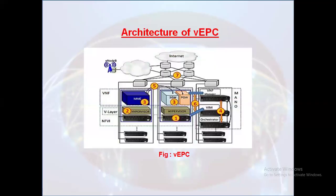Next we'll move on to the architecture of VEPC. This Virtualized Evolved Packet Core architecture mainly comprises of Virtualized Network Function, VNF, and Management and Orchestration, that we are calling it as MANO, and NFV Infrastructure, we are calling it as NFVI. This architecture enables seamless integration with existing network infrastructure, facilitates efficient resource utilization, and supports scalable and flexible network deployment.